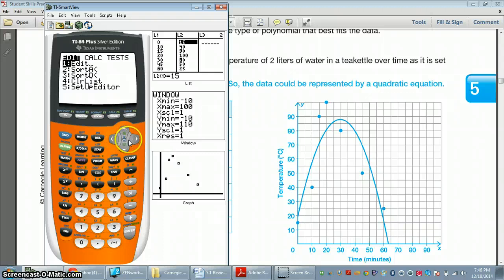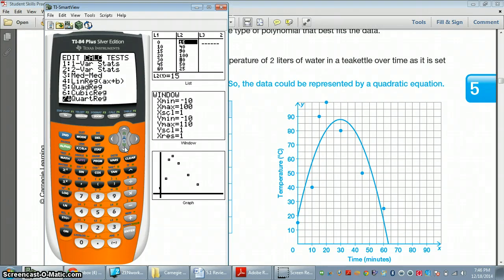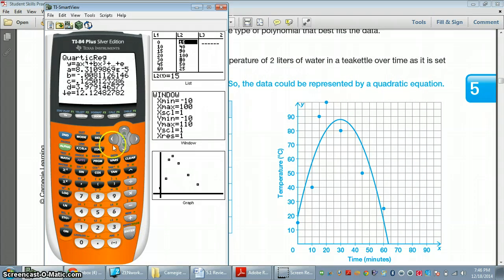If you thought maybe a quartic regression worked, you go with the same thing, stat, then you go over to calculate, and you go down to number 7, quartic, remember, is an x to the 4th. Push enter. It looks exactly the same. You push enter again. And when you look at your R squared value, you have to use the arrow down,